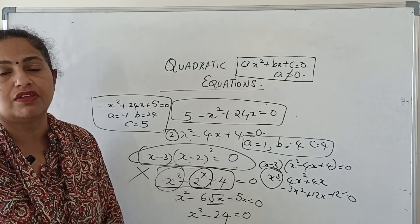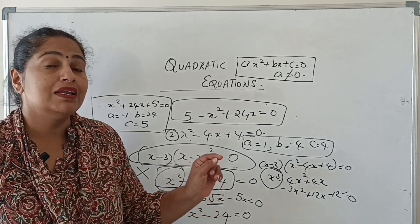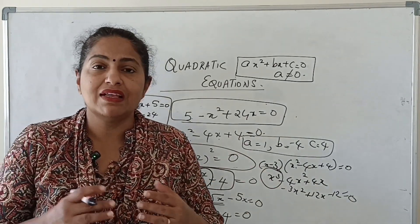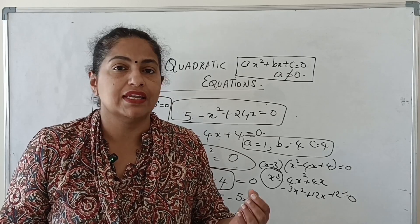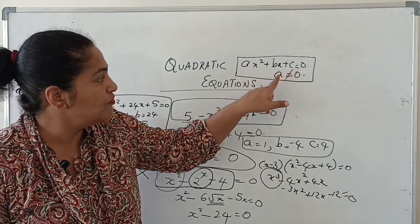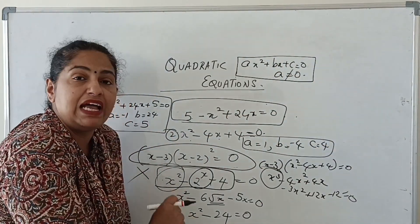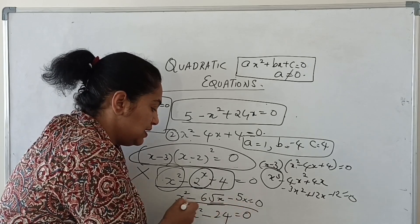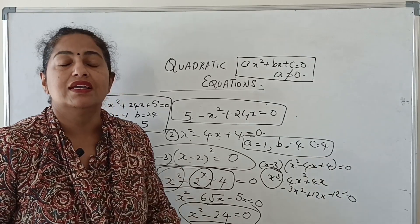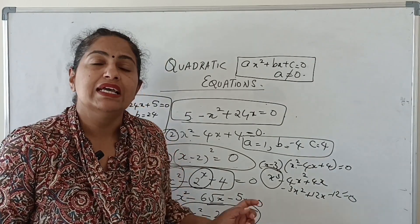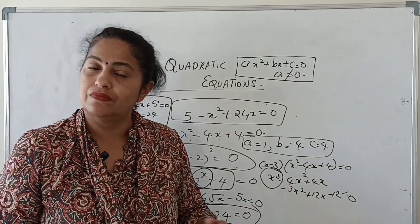The last one: x² − 24 = 0. Here there is an x² term and a constant term but no x term. What is the condition for a quadratic equation? A quadratic polynomial has to be equated to zero, and in ax² + bx + c, a must not equal zero, but b and c can be zero. So in this case b = 0, and since this is definitely a quadratic polynomial equated to zero, it is a quadratic equation with a = 1, b = 0, c = −24.